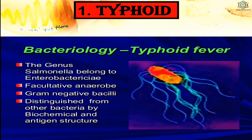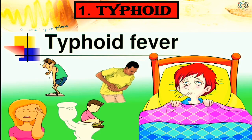The first common disease in humans is typhoid. Typhoid is a common bacterial disease caused by a rod-like bacterium Salmonella typhi, which is a facultative anaerobe, gram-negative bacilli, distinguished from other bacteria by biochemical and antigen structure. Typhoid is commonly found in the intestine of man. The disease is common in children of age group 1 to 15 years. Nearly 2.5 million people suffer from typhoid every year.